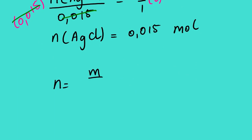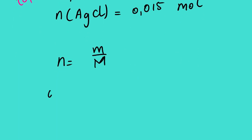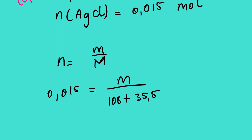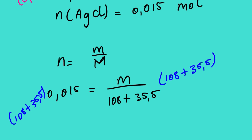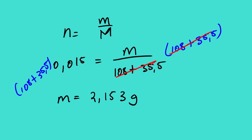From here we use N equals M over M. The number of moles is 0.015 equals mass over molar mass. The molar mass of silver chloride is 108 plus 35.5. Multiplying both sides by 143.5, we get that the mass in grams is 2.153 grams. So this is the final answer.